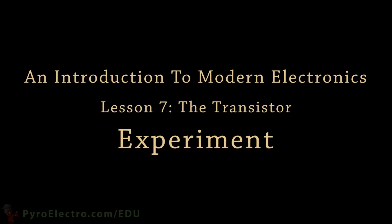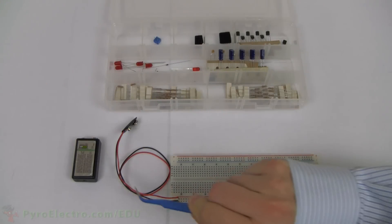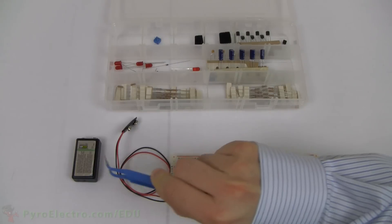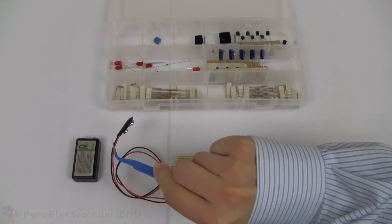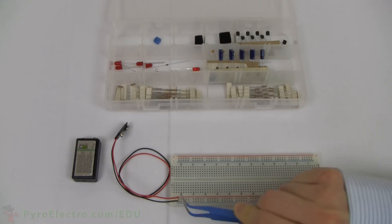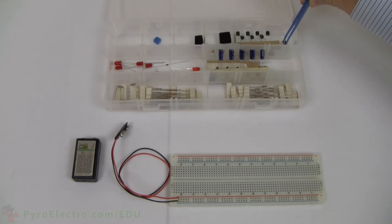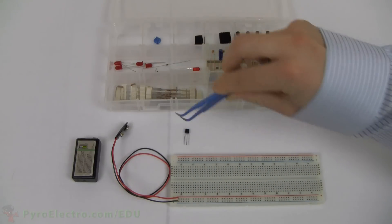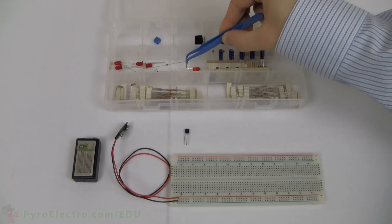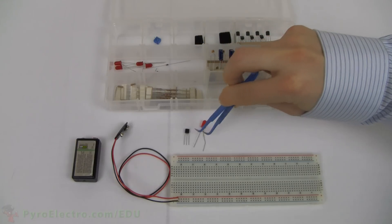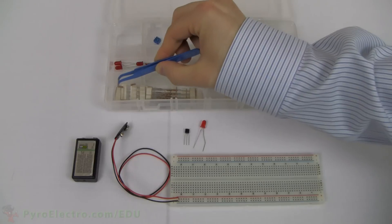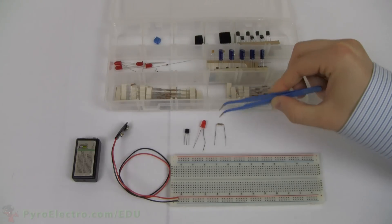Let's perform an experiment to see what transistors are all about. Here I have a 9V battery, 9V battery connector, breadboard, 2N3904 BJT transistor, a red LED, and two 470 ohm resistors from the parts kit.